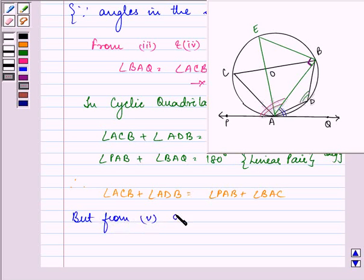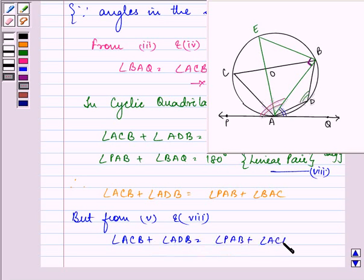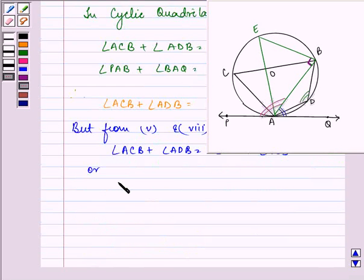But, from the fifth and the eighth equation, we get angle ACB plus angle ADB is equal to angle PAB plus angle ACB. Or, we can say that angle ADB is equal to angle PAB.